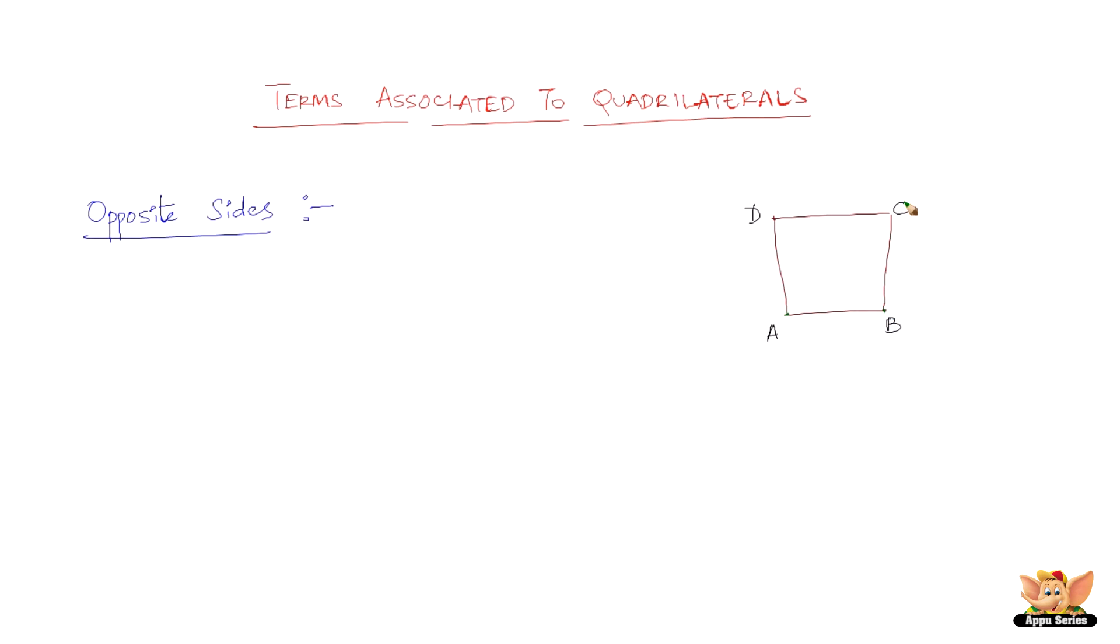So what can be then? Okay, AB and CD definitely can be opposite sides because these lines do not share a common vertex. They do not share a common point. So this is called as opposite sides.